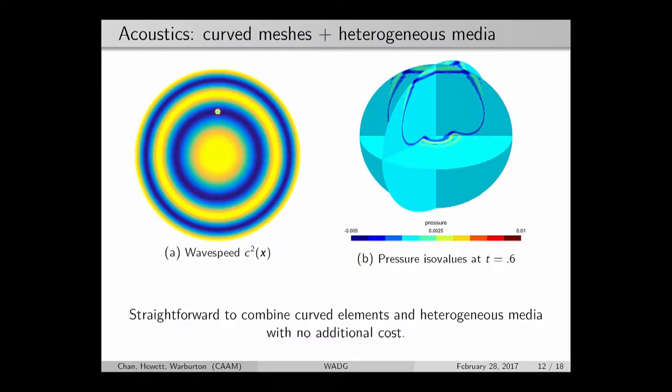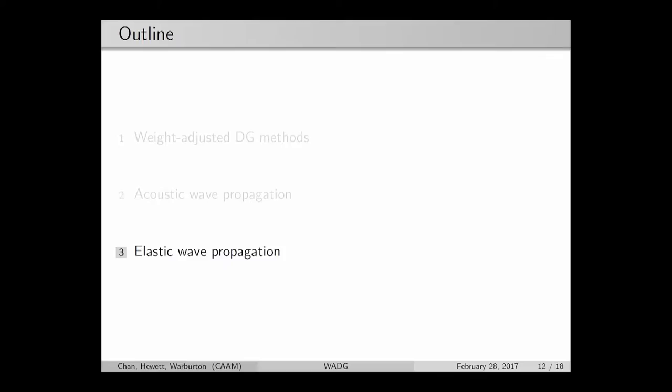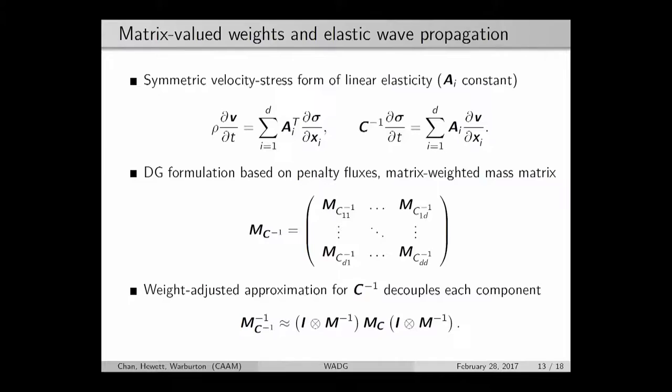More recently we've also aimed to extend these ideas to elastic wave propagation. Acoustic waves are great, but as we've heard this morning, we do need to incorporate additional physics to get appropriate realism sometimes. What we found is that we've talked so far about weighted mass matrices when the weight is a scalar function. In this case, we can use the weight-adjusted DG method. But it turns out if the weight is actually matrix-valued, we can apply the exact same ideas to come up with a low-storage and efficient implementation, and in fact, it's even more efficient in this case.